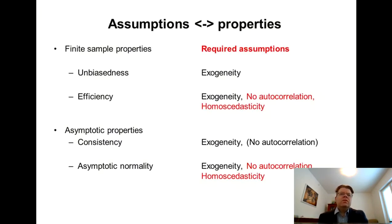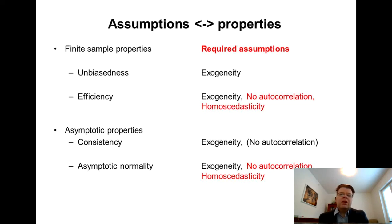Coming back to the list of assumptions and properties discussed earlier in the course, it is very important to understand which specific assumptions are needed to prove certain properties. For example, for unbiasedness of the estimator, exogeneity was enough. This highlights that the endogeneity problem is very serious because all desirable properties of the OLS estimator disappear if the exogeneity property is violated. Whereas homoscedasticity only affects the efficiency of the estimator and asymptotic normality, which is critical for statistical tests and confidence intervals.